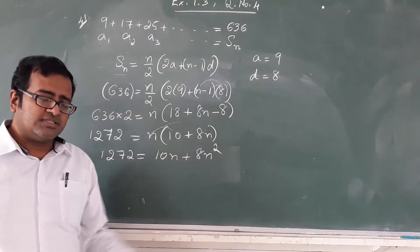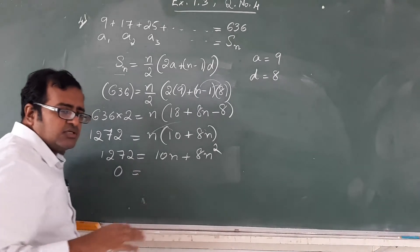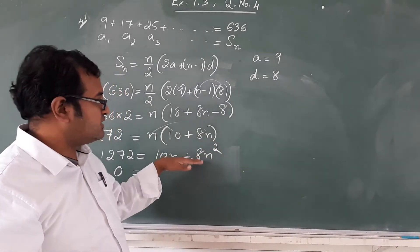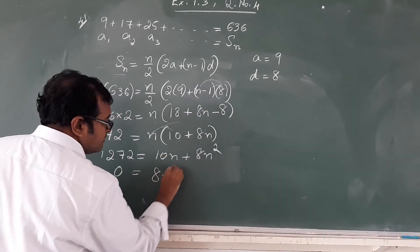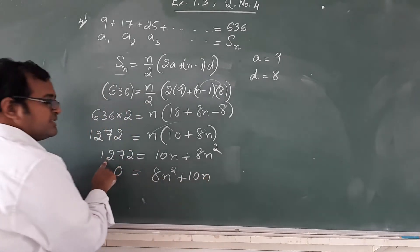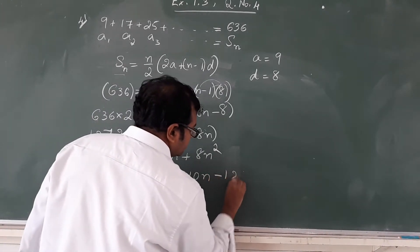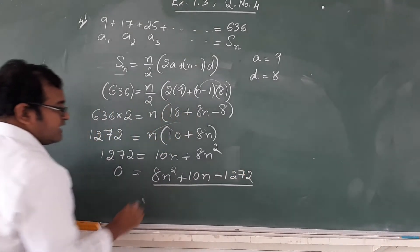Taking the constant to the opposite side it becomes 0 equals. We will arrange it in a quadratic equation, always highest order to lowest order. The highest degree of the variable will be used first. So I am using 8n square first, plus 10n. Sign of 1272 will change, it will become minus 1272. So we get a quadratic equation.